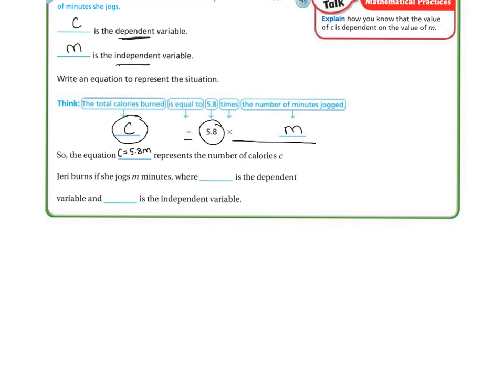5.8M represents the number of calories C Jerry burns if she jogs M minutes, where C is the dependent variable and M is the independent variable. We're not solving it right now — we're just simply writing out the equation.